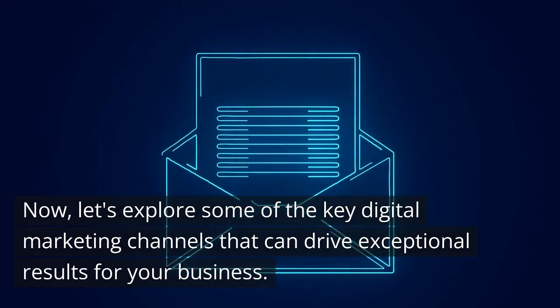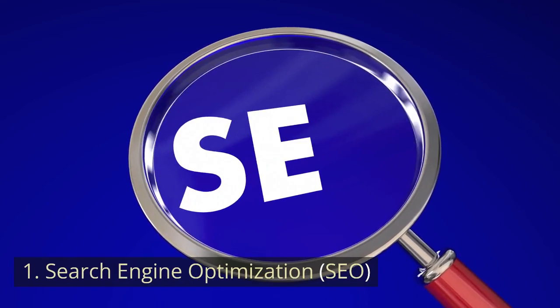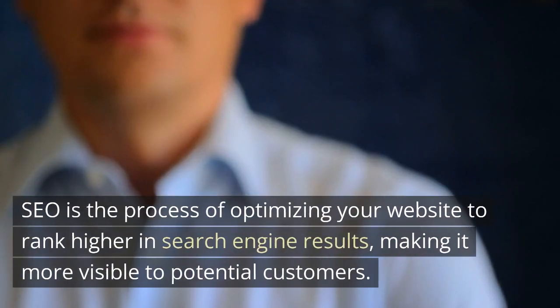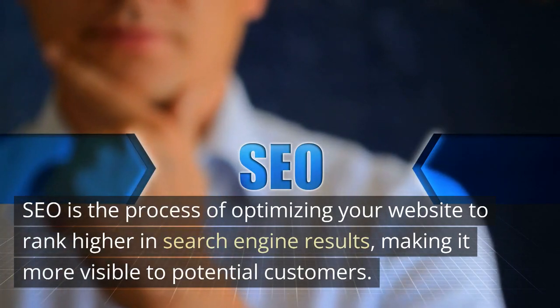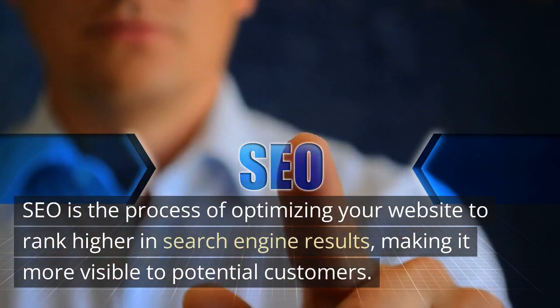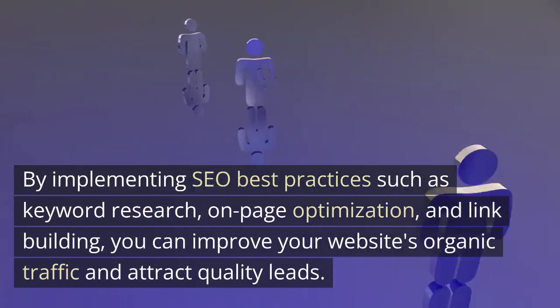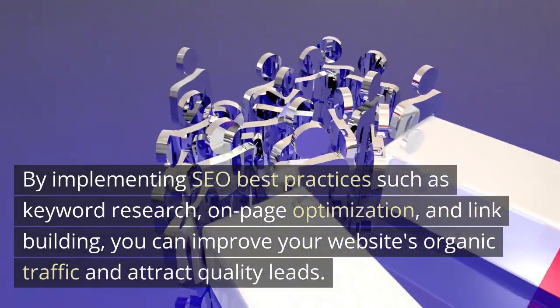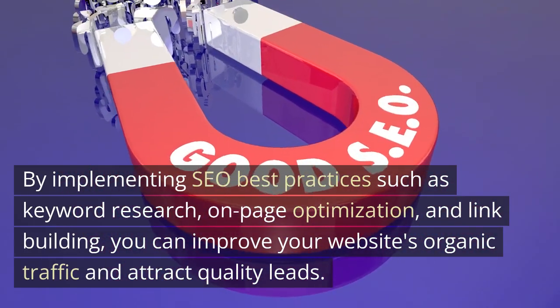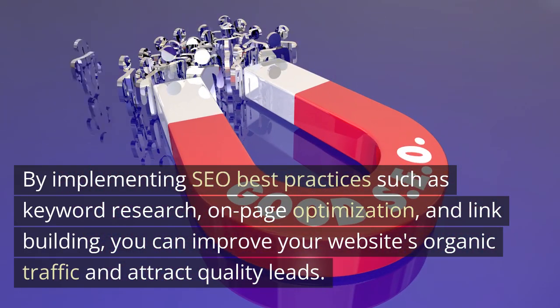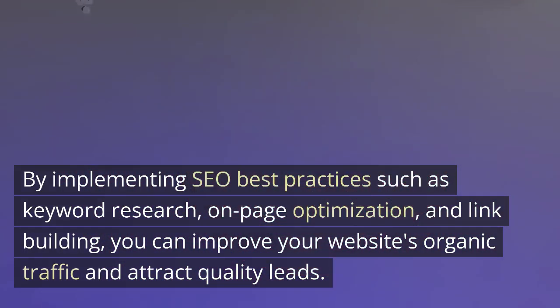Now let's explore some of the key digital marketing channels that can drive exceptional results for your business. First, search engine optimization — SEO is the process of optimizing your website to rank higher in search engine results, making it more visible to potential customers. By implementing SEO best practices such as keyword research, on-page optimization, and link building, you can improve your website's organic traffic and attract quality leads.